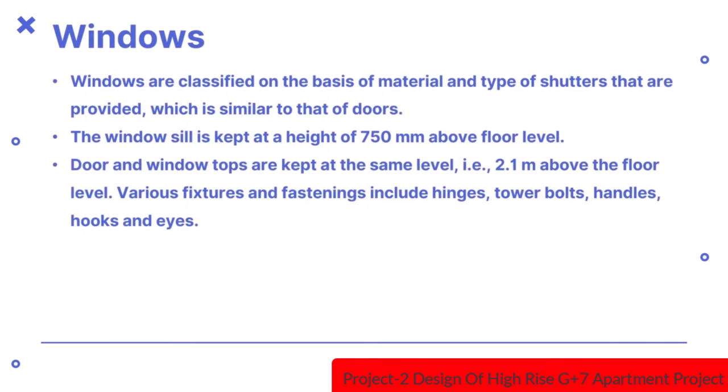Windows are classified on the basis of material and type of shutters, similar to that of doors. The windowsill is kept at a height of 750mm above floor level. Door and window tops are kept at the same level, that is 2.1m above the floor level. Various fixtures and fastenings include hinges, tower bolts, handles, hooks and knives.